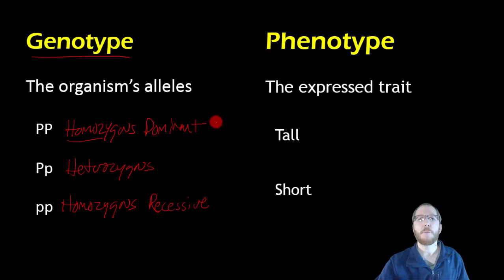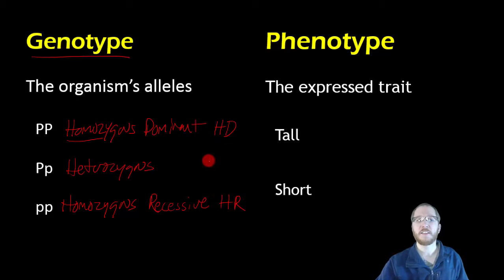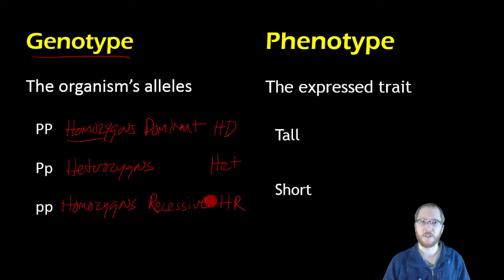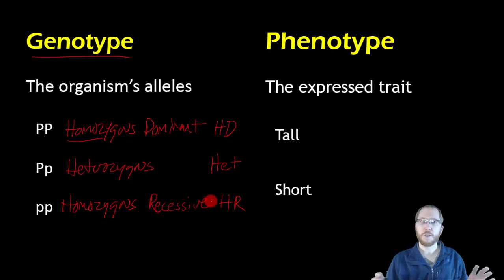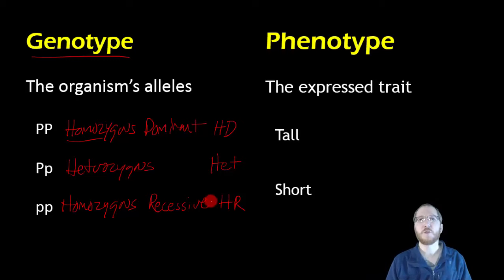If you want to abbreviate: I usually use capital HD for homozygous dominant, capital HR for homozygous recessive, and capital H, lowercase et for heterozygous. So if you'd like to shorten your notation, you'll see me do this as well just to keep it simple.